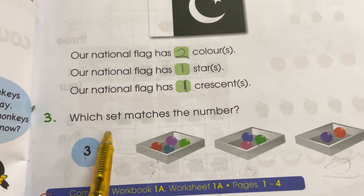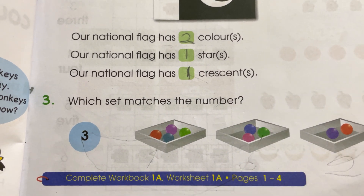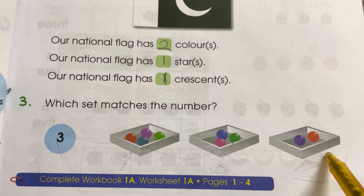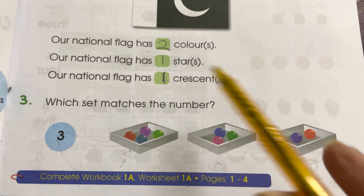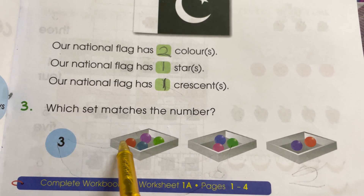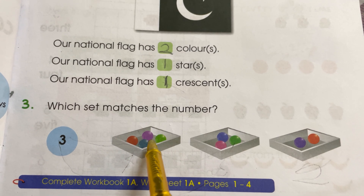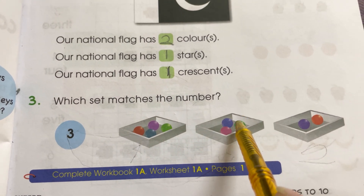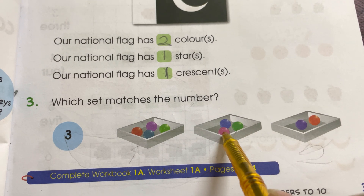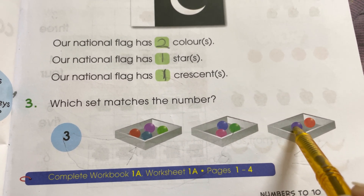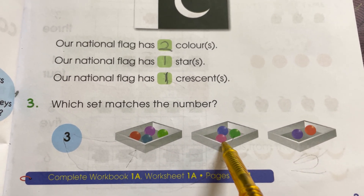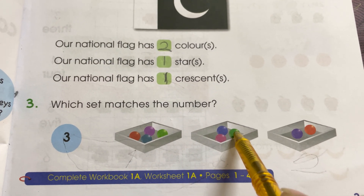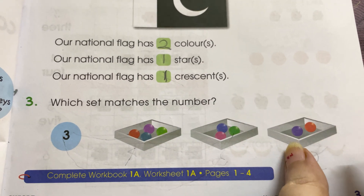Which set matches the number? We have to match the number 3 with a set. Set 1 has 1, 2, 3, 4 — 4 balls. Does it match 3? No. The second set has 1, 2, 3 — 3 balls. The third set has 1, 2 — 2 balls. So the number 3 matches set 2, as it has 3 balls.